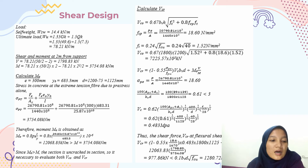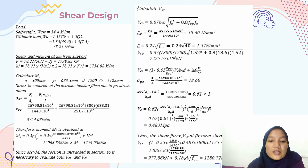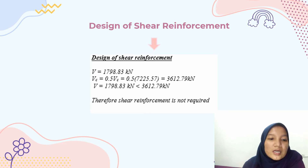For the shear resistance, since the moment MO is less than the cracking moment, it is necessary to evaluate both VCO and V critical. V critical is obtained as 0.483 MPa. The shear force at the critical cracking section is 1,280 kN. Since the applied shear force is less than V critical, shear reinforcement is not required.